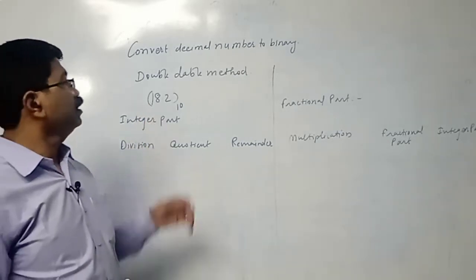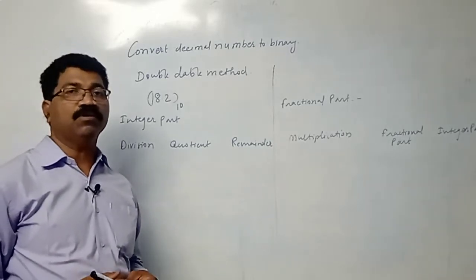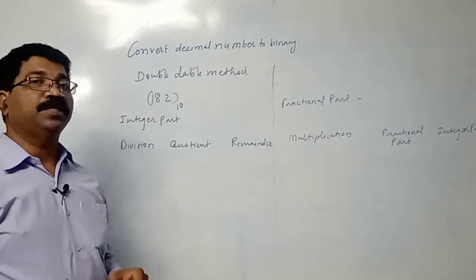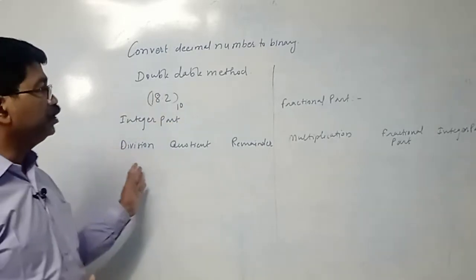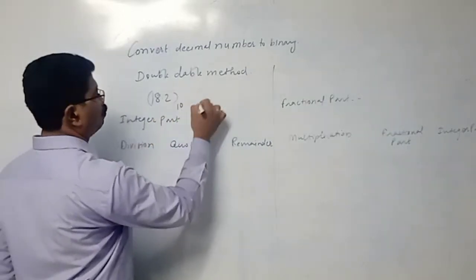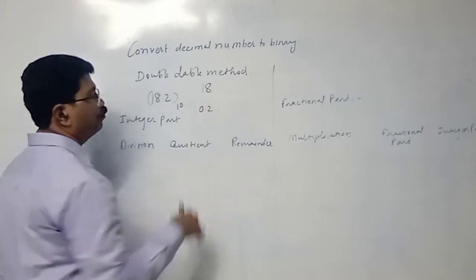Let us consider the decimal number to be 18.2. Now we have to bifurcate this decimal number into two parts: integer part and fractional part. So 18.2 can be divided into two parts. 18 is the integer part and 0.2 is the fractional part.